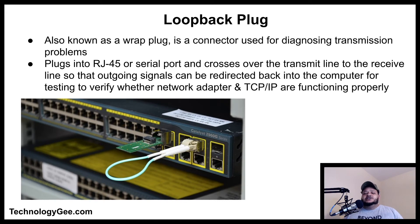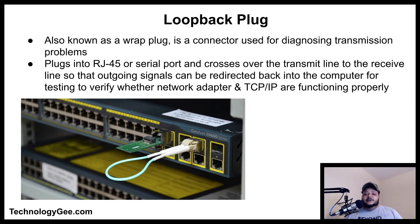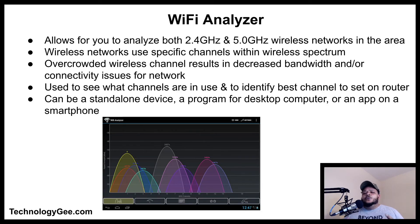A loopback plug, also known as a wrap plug, is a connector used for diagnosing transmission problems. It plugs into an Ethernet or RJ45 port or a serial port and crosses over the transmit line to the receiving line so that the outgoing signals can be redirected back into the computer for testing, to verify whether the network adapter and TCP/IP are functioning properly.